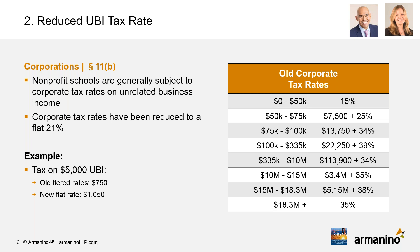This is effective for tax years beginning in 2018, affecting calendar-year entities this year and fiscal-year entities for the 2018–19 tax year. If you expect a tax liability on unrelated business income in 2018, it's important to calculate and pay quarterly estimated taxes to both the IRS and the FTB to avoid underpayment penalties and interest. Interest on tax underpayments can become significant given the long extension period afforded to exempt organizations, so reach out to your tax advisor early.